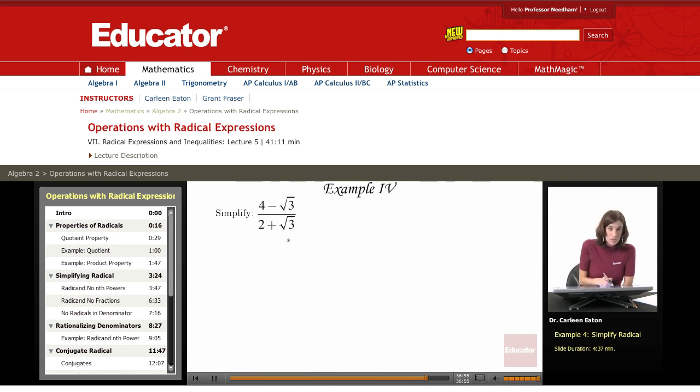Recall that to simplify a radical binomial expression, you multiply both the numerator and the denominator by the conjugate of the denominator. So here I have 2 plus square root of 3. The conjugate of that is going to be 2 minus the square root of 3. So these are conjugates. This is a conjugate pair.